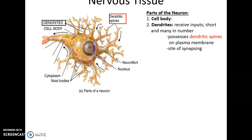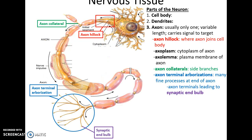There are usually many dendrites — short processes coming off the cell body — that are important for receiving information and passing it down the neuron. Dendrites possess dendritic spines, little bumps on the plasma membrane where synapsing can occur. Sometimes dendrites also act as sensory receptors. The axon is a long process coming off the cell body that goes to various targets — either neurons or effectors. At the very beginning of the axon is the axon hillock, a cone-shaped structure formed off the cell body.